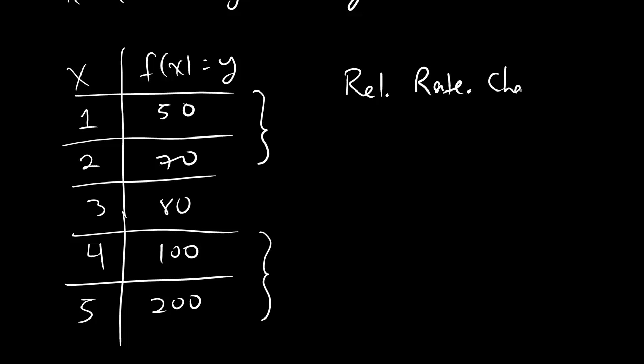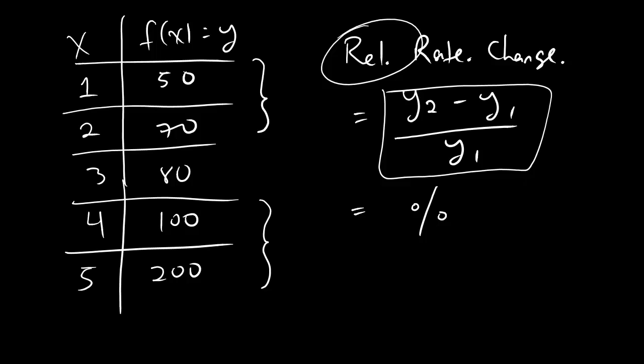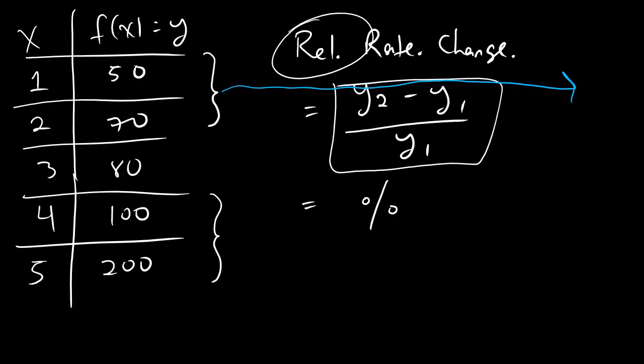Now, first the formula. The formula for relative rate of change is y2 minus y1 over y1. And this gives you a percentage. So, the number that this gives you is the percent change. And that percentage is why we call it a relative rate of change. So, if you see anything in homework about give me the relative rate or give me the percent change, then this is the formula you should be using. y2 minus y1 over y1. Let's in blue, because I like blue, figure out the relative rate of change over here.